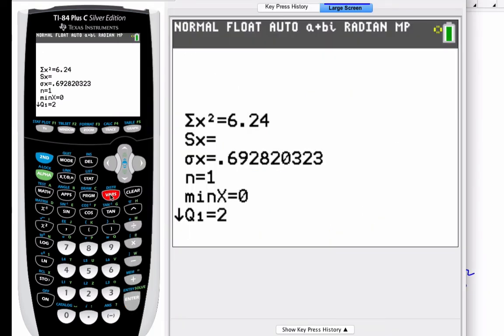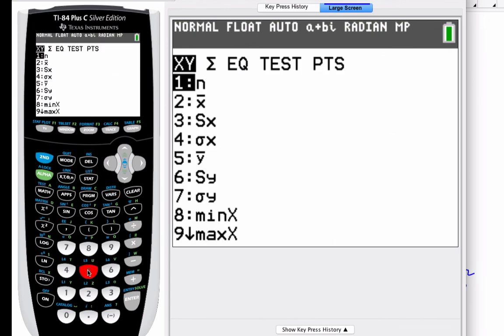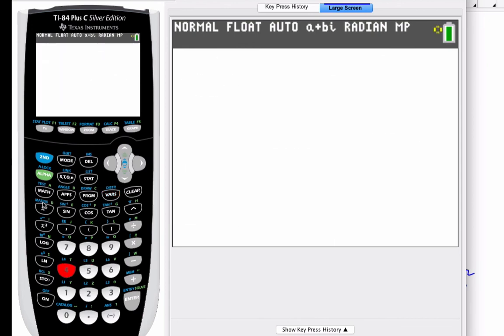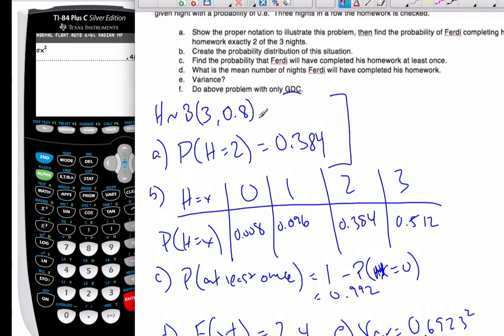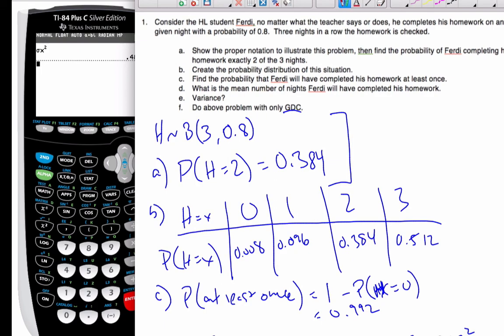My variance is equal to 0.6923 squared. To do that, I go to my variables. Statistic variables. Number 4 squared. And I get 0.48. So our calculator will do all these problems very quickly.